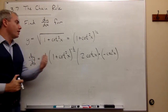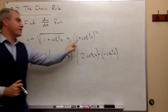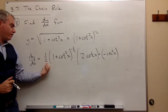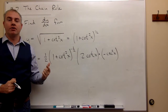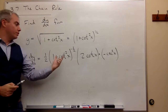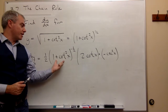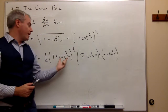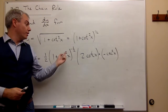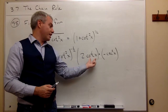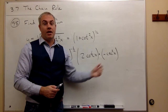Let's review this one more time. I started with something to the one-half power, and the derivative of something to the one-half power is one-half times something to the negative one-half — that's just the power rule. But then I have to remember to multiply by the derivative of what was on the inside. The derivative of 1 is zero, and the derivative of cotangent squared of x requires the chain rule: I brought down the 2, times cotangent of x, times the derivative of cotangent of x.